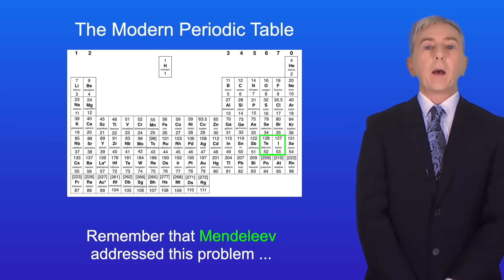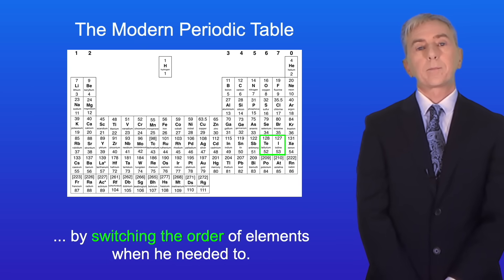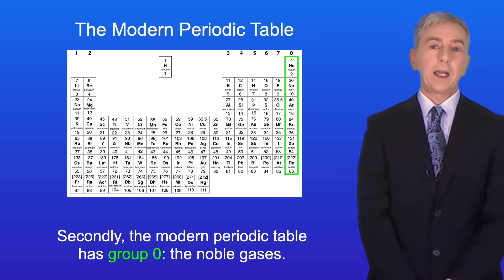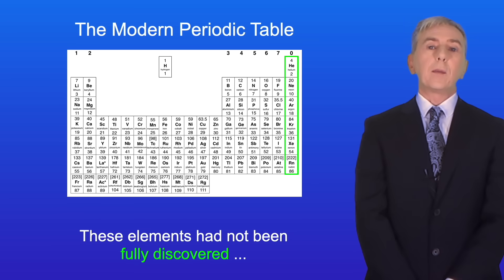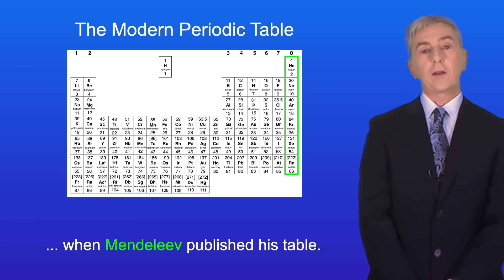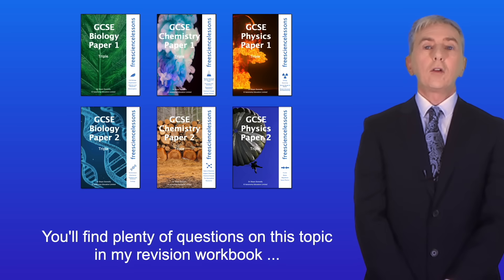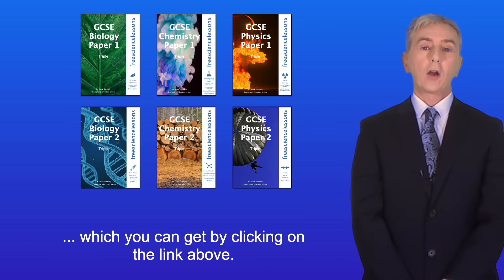Secondly, the modern periodic table has group zero — the noble gases. These elements had not been fully discovered when Mendeleev published his table. You'll find plenty of questions on this topic in the NoVision workbook, which you can get by clicking on the link above.